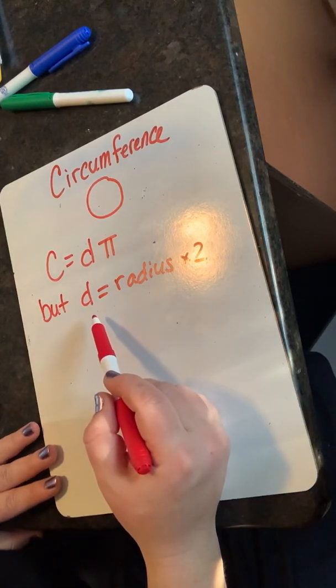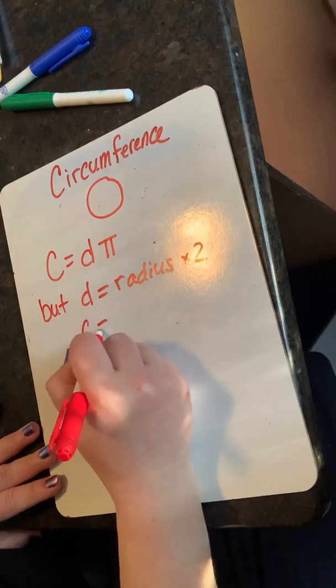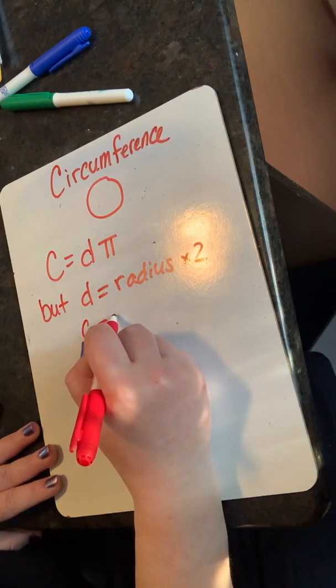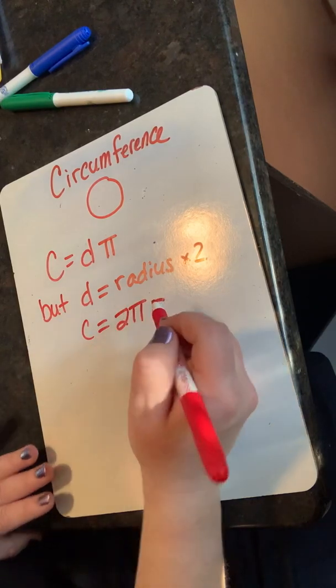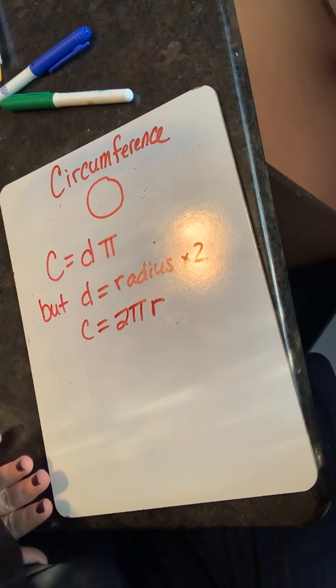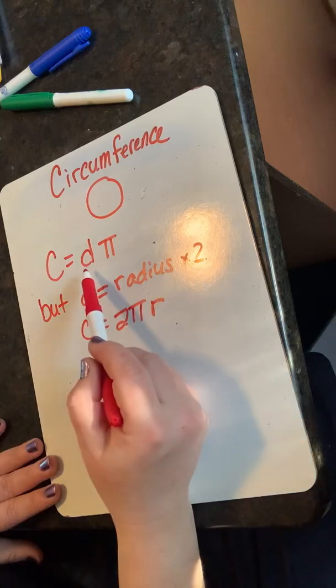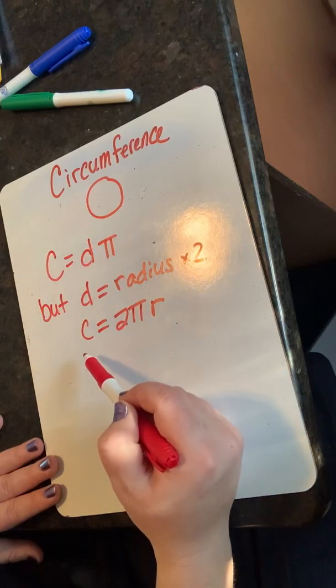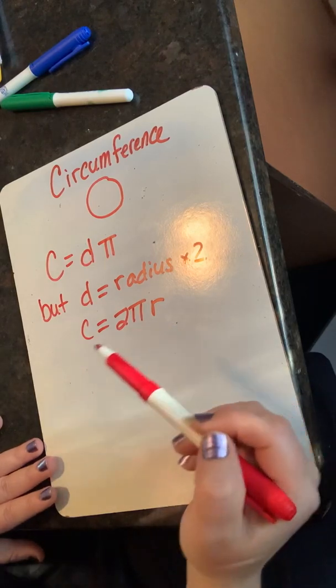So I can substitute radius times two for diameter and rewrite my equation. I substitute radius times two for diameter and my other circumference equation is circumference equals two times pi times radius.